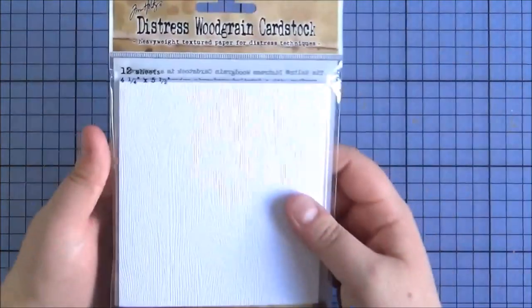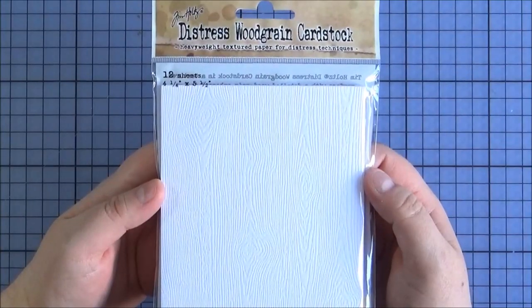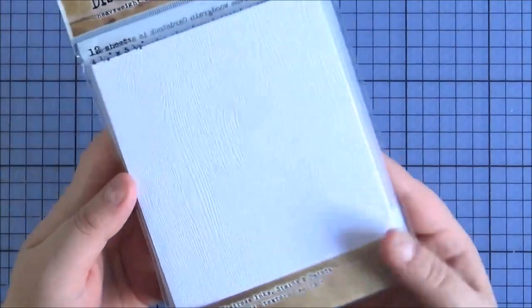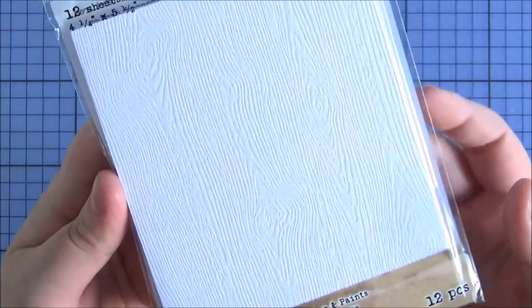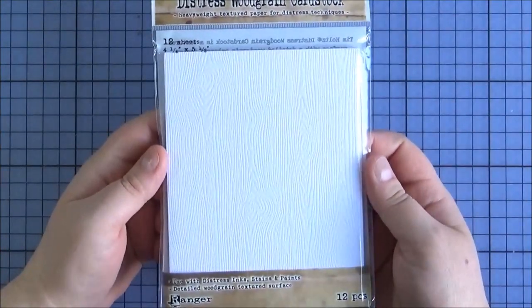Next up, I've got a couple of Tim Holtz Distress items. So this is the Tim Holtz Distress Woodgrain Cardstock. I don't know how well you can see on camera, but it's got a lovely woodgrain texture, and I thought it would be really nice to use with Distress inks and things to make some backgrounds.